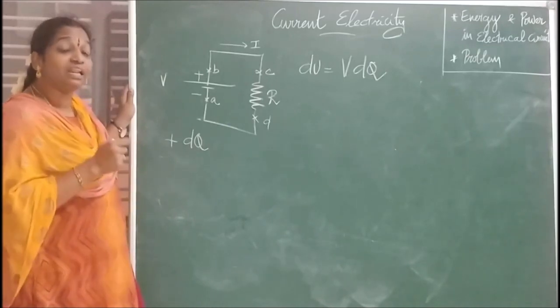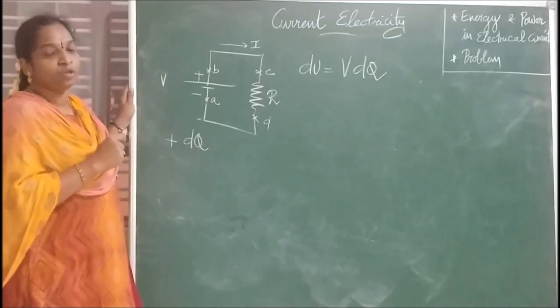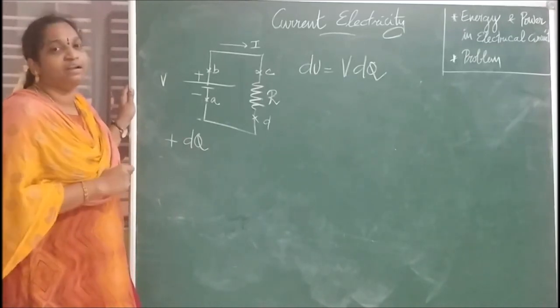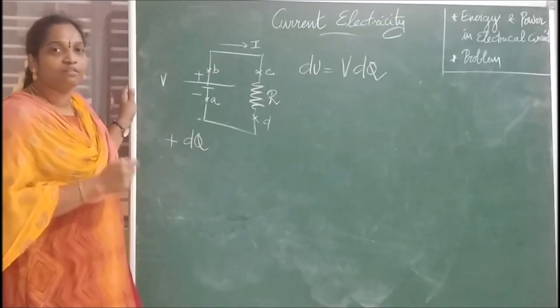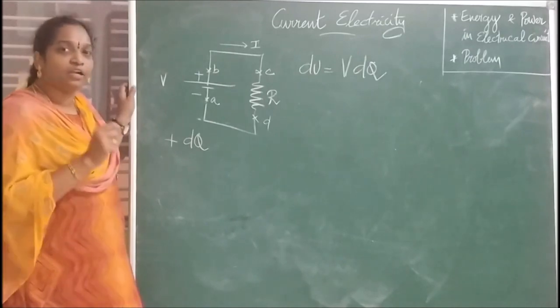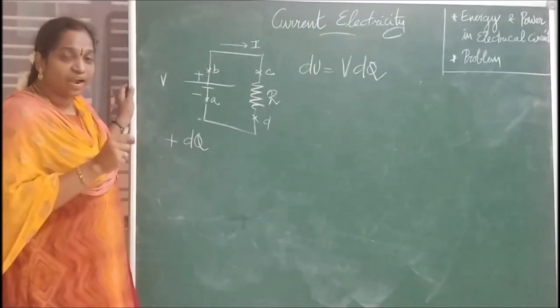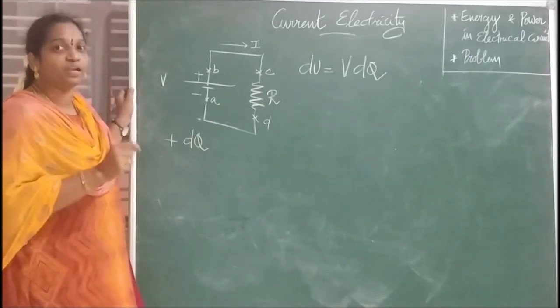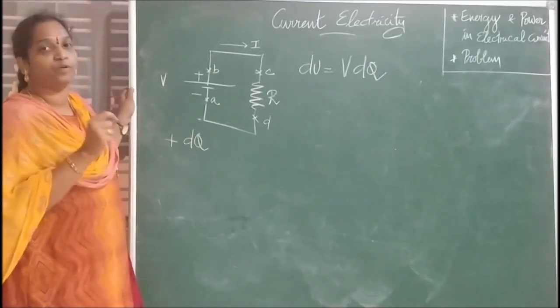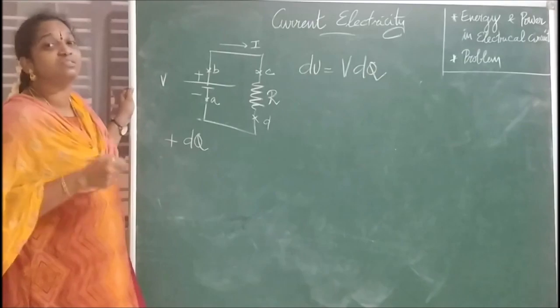This helps us to calculate the rate at which electric energy is delivered or lost in the electrical circuit. We are calling this electric power. Now we will define electric power. Electric power is defined as the rate at which electric potential energy is delivered.